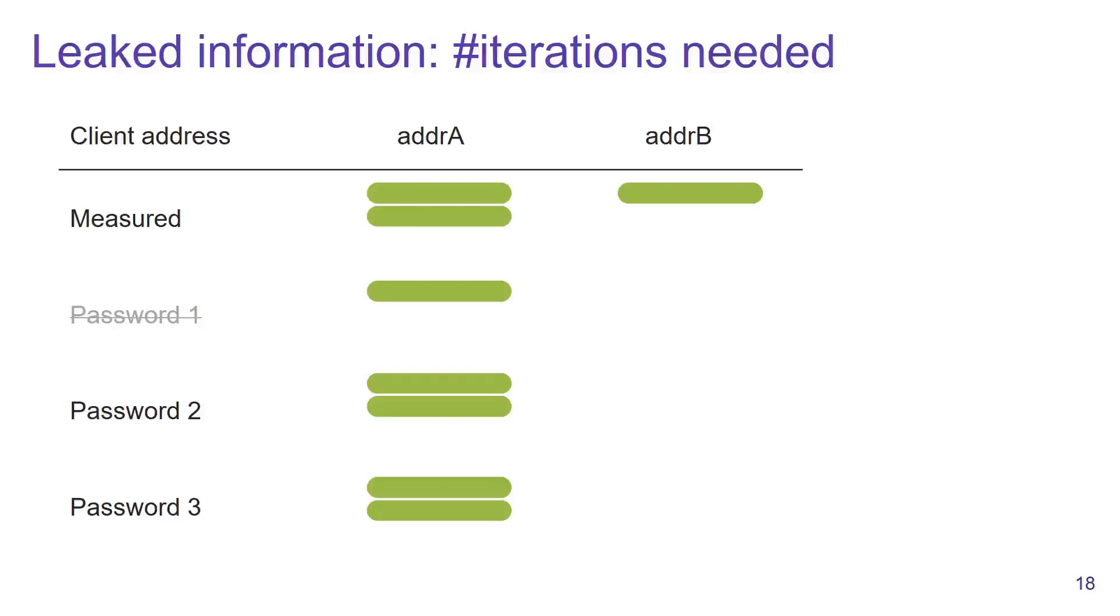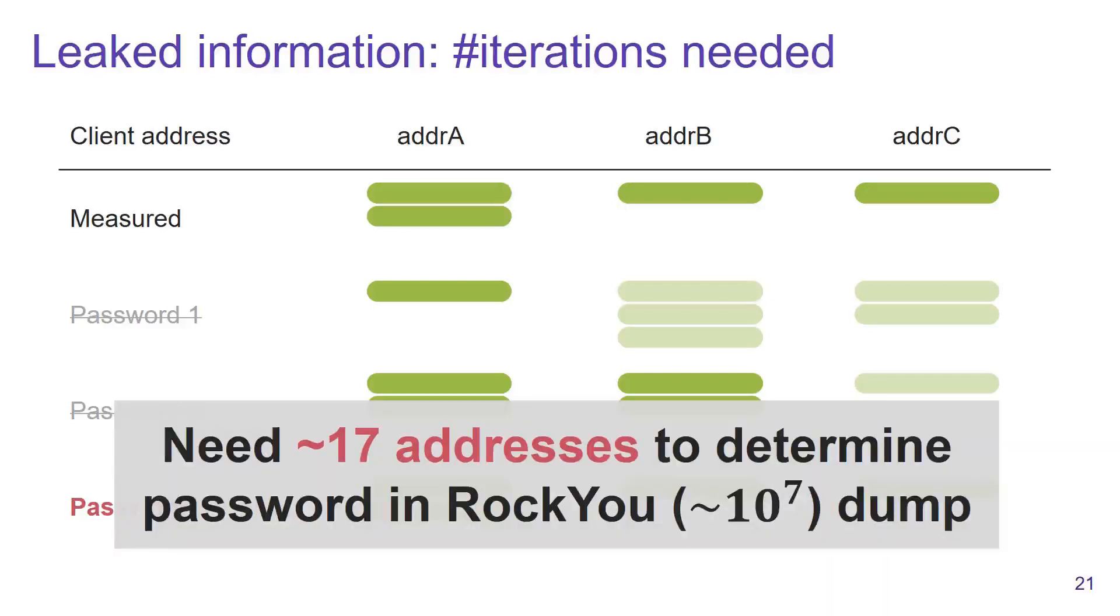We again execute the hash-to-group algorithm offline and exclude passwords that do not match our observation. We continue spoofing MAC addresses until we uniquely determine the password of the network. So what is the complexity of this attack?